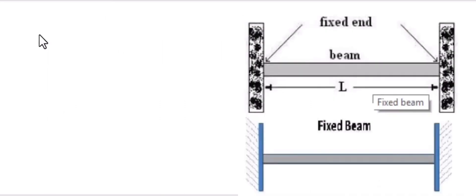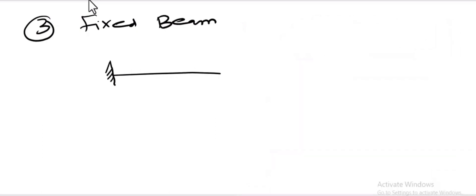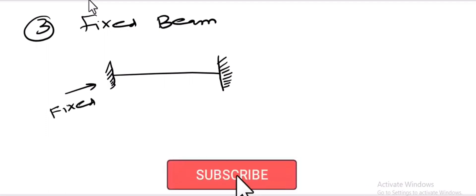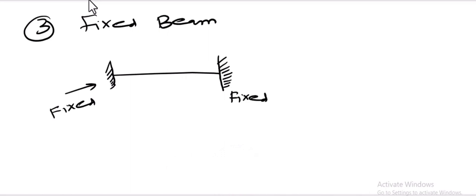The third type of beam is the fixed beam. A fixed beam is a type of beam whose two ends are fixed. Both end supports are always fixed supports, and that type of beam is called a fixed beam.